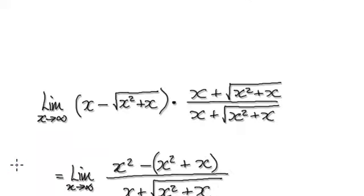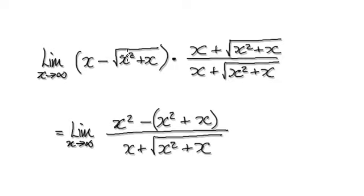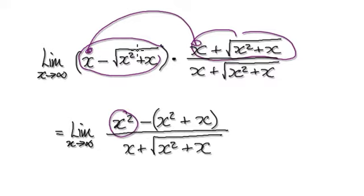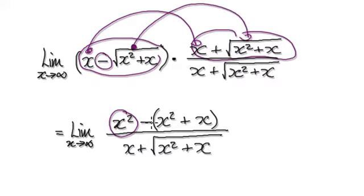So to do this, when you times top and bottom by the conjugate, the good thing about multiplying by the conjugate is that it simplifies itself. So when you get this times this, it will give you x squared. The middle two terms will cancel each other out, and then you've just got this times this. So this will become a negative, and then whatever is in the bubble here, so it becomes that.